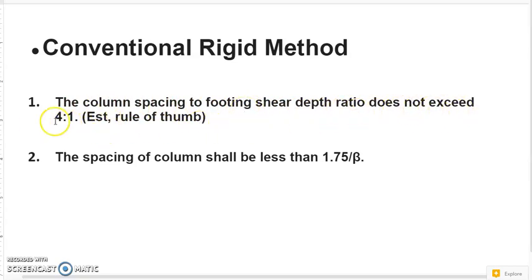If the ratio is greater than 4-to-1, then the conventional rigid method doesn't apply. That means the foundation rigidity is too weak. Either we can enhance the whole foundation rigidity to use conventional method or we just use approximate flexible method.